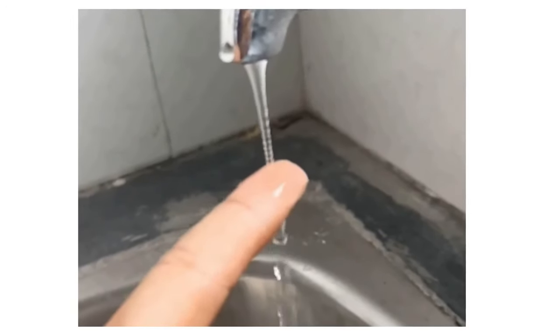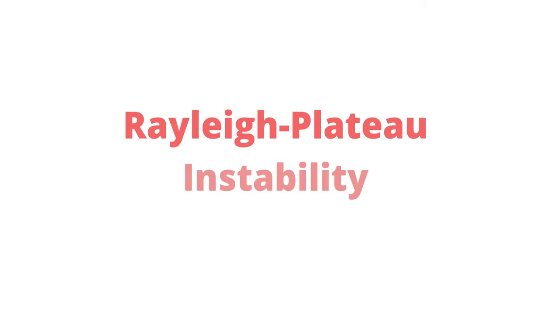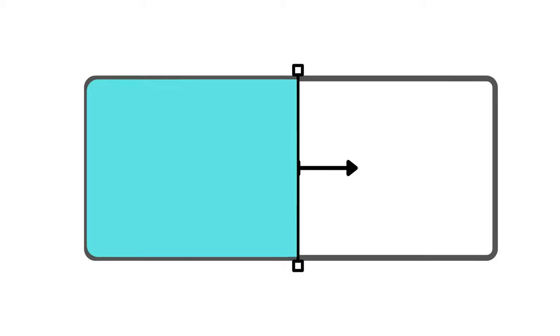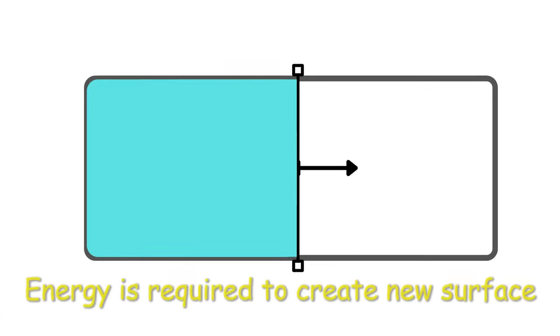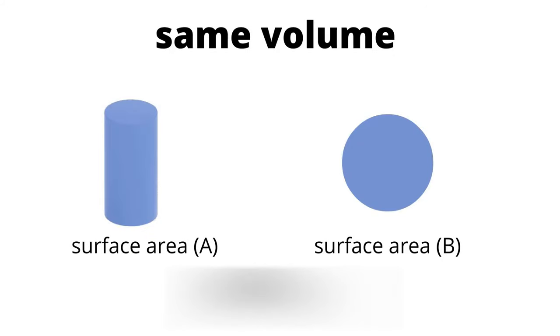Well, the reason is Rayleigh-Plateau instability. What we know from our previous knowledge is we require energy to increase the surface area, and for the same volume of liquid, the spherical shape has a lower surface area than cylindrical shape.